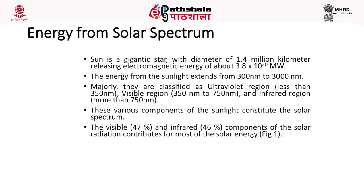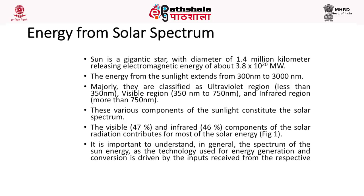This energy extends from the wavelength 300 nanometer to 3000 nanometer. These are classified as the ultraviolet region which is less than 350 nm, visible region 350 to 750 nm, and infrared region which is more than 750 nanometer. You can see this in the solar spectrum. The visible accounts for 47% and infrared around 46% of the solar radiation. It is important to understand the spectrum of solar energy as the technology used for energy generation is driven by the input received from the respective spectrum of solar irradiance.